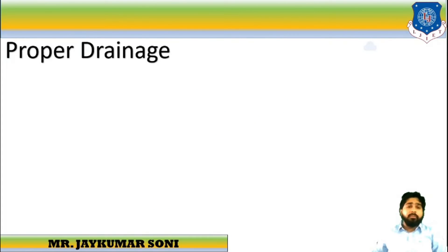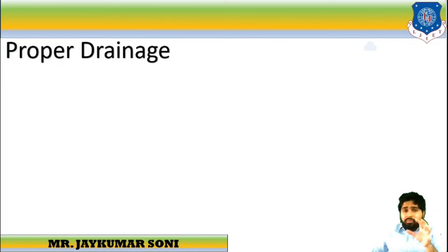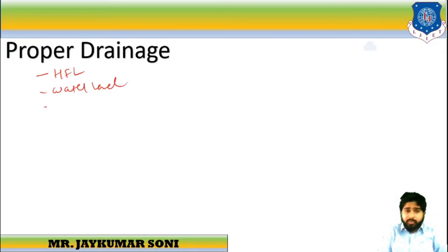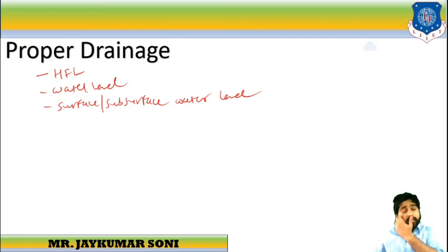The first is Proper Drainage. Whenever we place the road alignment, proper drainage availability should be there — both subsurface and surface drainage. In order to provide proper drainage, the high flood level should be studied, the water level at the ground should be studied, and the surface and subsurface water levels should also be studied.